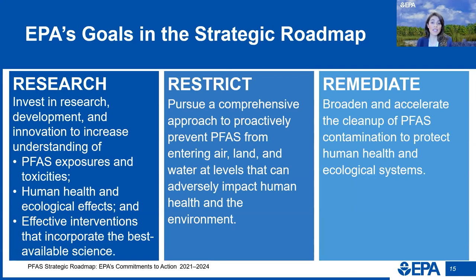The risks posed by PFAS demand that EPA attack the PFAS problem on multiple fronts at the same time. EPA's integrated approach to PFAS is focused on three goals. First, research: EPA is investing in research, development, and innovation to increase understanding of PFAS exposures and toxicities, human health and ecological effects. Second, restrict: EPA is pursuing a comprehensive approach to proactively prevent PFAS from entering land, air, and water at levels that can adversely impact human health and the environment. Third, remediate: EPA is broadening and accelerating the cleanup of PFAS contamination.